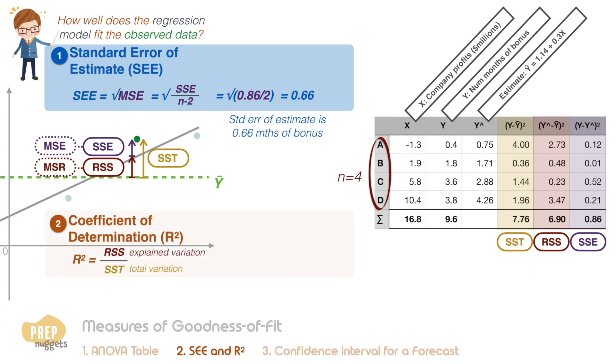And for the coefficient of determination, we plug in the RSS and the SST. We get an R-squared of 0.89. This means that 89% of the variation from the mean is explained by the regression model.